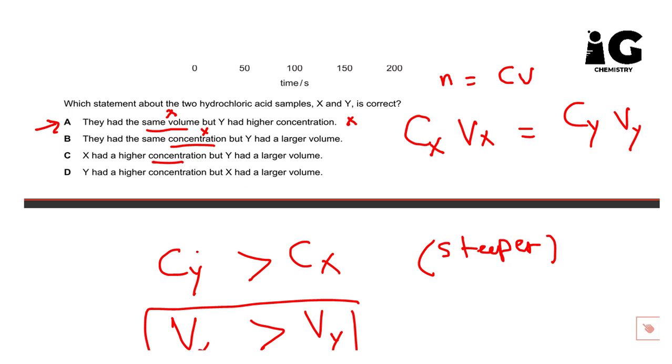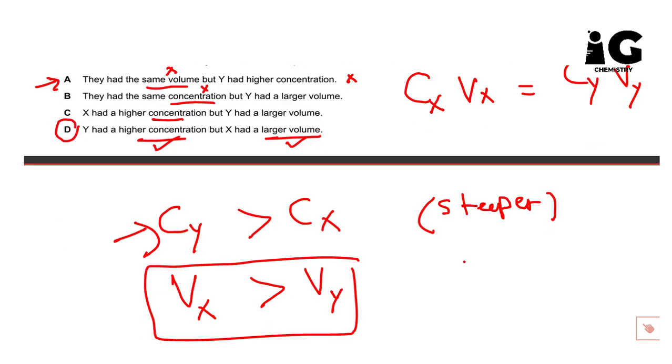Actually no. Look at this, CY, so Y actually had a higher concentration, not X. The last one, D: Y had a higher concentration, yes correct because it's steeper, but X had a larger volume, yes this is correct. So the correct answer, regarding the mark scheme, should be D.